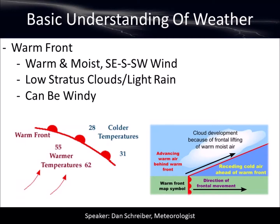Let's talk about weather fronts. There are four main types of weather fronts: a warm front, cold front, stationary front, and occluded front. There's also what we call a dry line front — it's not really a true front, but it works much like one. I'm going to talk about those, starting with the warm front.